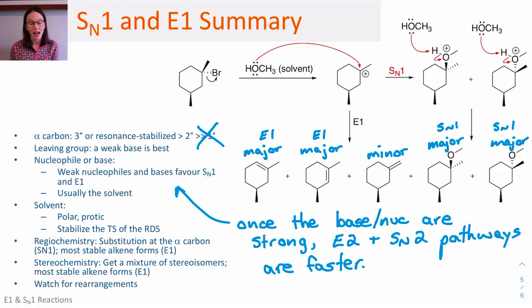So, one of the big challenges with these reactions is that they can form a massive number of products. Look at the five different products on screen that can be formed from this single starting point. So, in the lab, there are some things we can do. We can heat things up to try to favor an E1 over SN1. It doesn't always work.